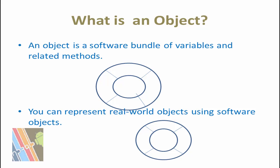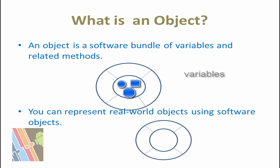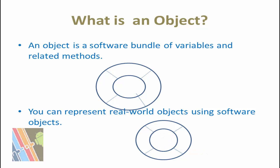So what is an object? An object is a software bundle of variables and related methods. You can represent a real-world object using a software object. For example, you might want to represent a real-world bicycle as a software object. That object would have variables indicating the bicycle's state — for example, speed is 10 RPM, pedal cadence is 90 RPM, and current gear is fifth gear. These are called instance variables, and the associated functions are called instance methods.